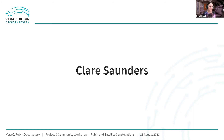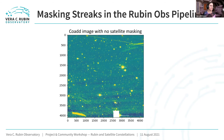Let me introduce my colleague Claire Saunders, who is a member of the Rubin data management team based in Princeton and is going to tell us a little bit about some of the algorithmic work going on for streak masking. I'll try to be speedy. I'm going to cover what the Rubin data management team is doing right now to deal with streaks in our data.